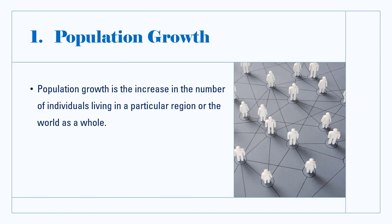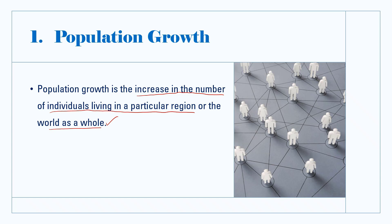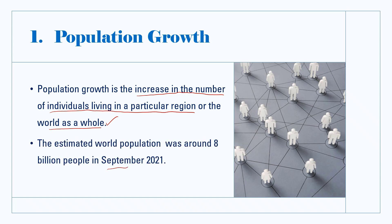Population growth is the increase in the number of individuals living in a particular region or the world as a whole. As per the update in September 2021, the estimated world population was around 7.9 to 8.0 billion people. The global population growth rate was around 1.05 percent per year, meaning the world population was growing by approximately 83 million people annually.